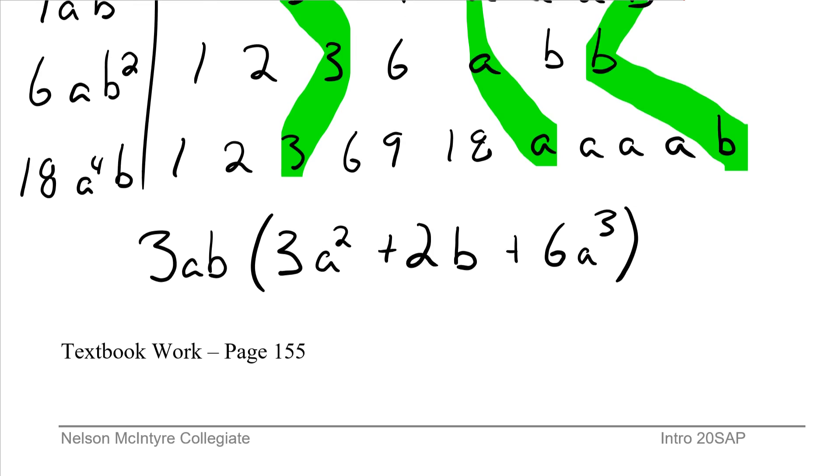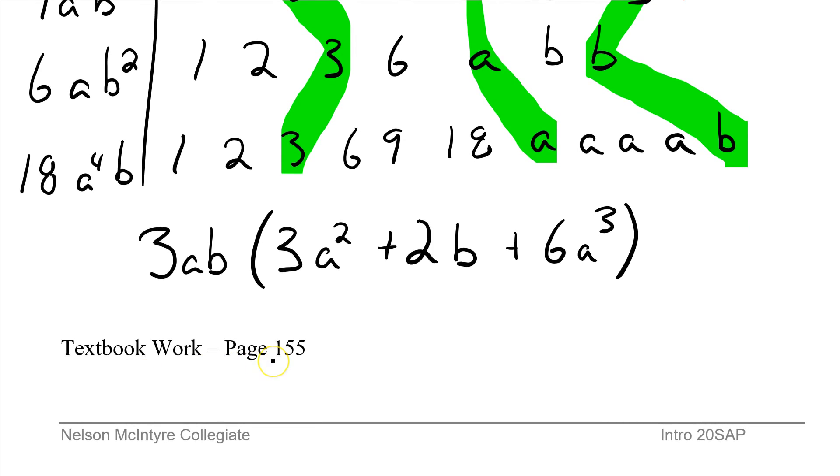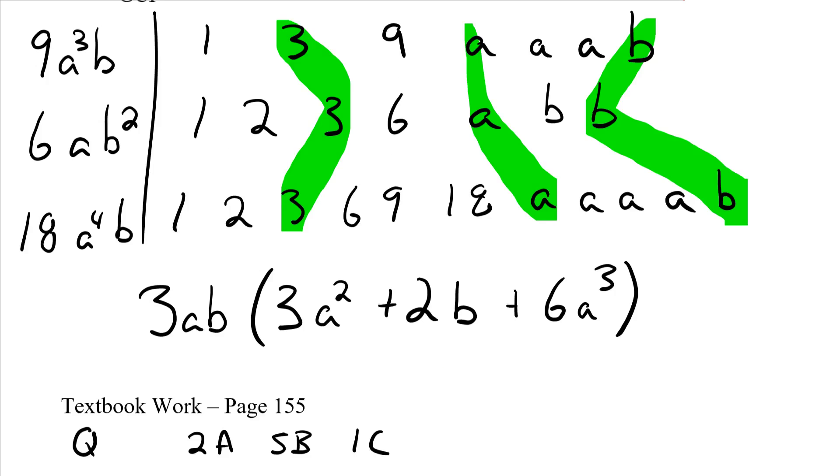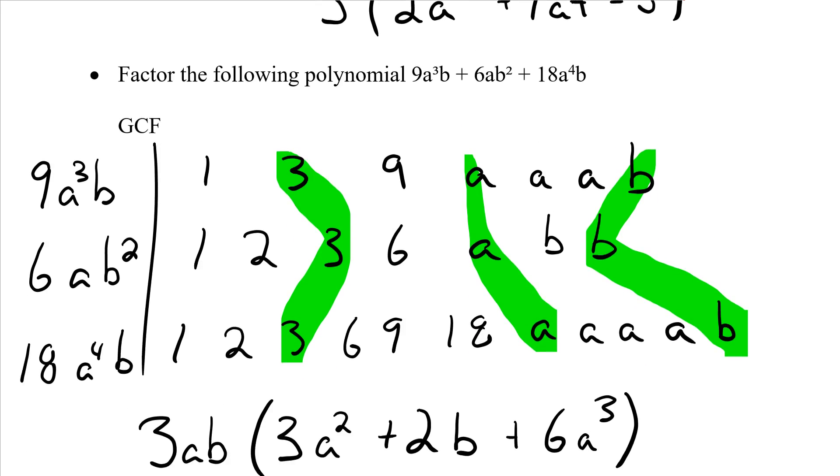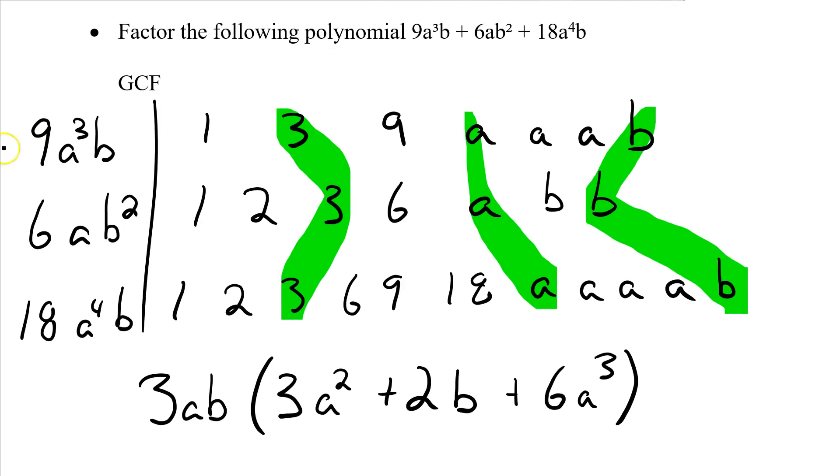We've got some textbook work. Page 155. Questions got cut off here, so I'll write them in. You can do 2 from the a's, 5 from the b's, and try 1c. I think if you remember to show your work, set up your table, make sure you understand what all the factors are and what's the greatest, you'll have no problem with this.